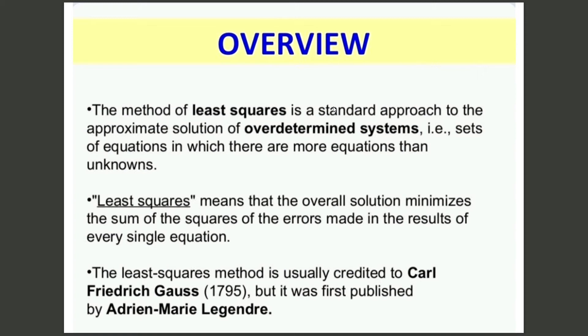The least squares method is usually credited to Carl Friedrich Gauss in 1795, but it was first published by Adrien-Marie Legendre.